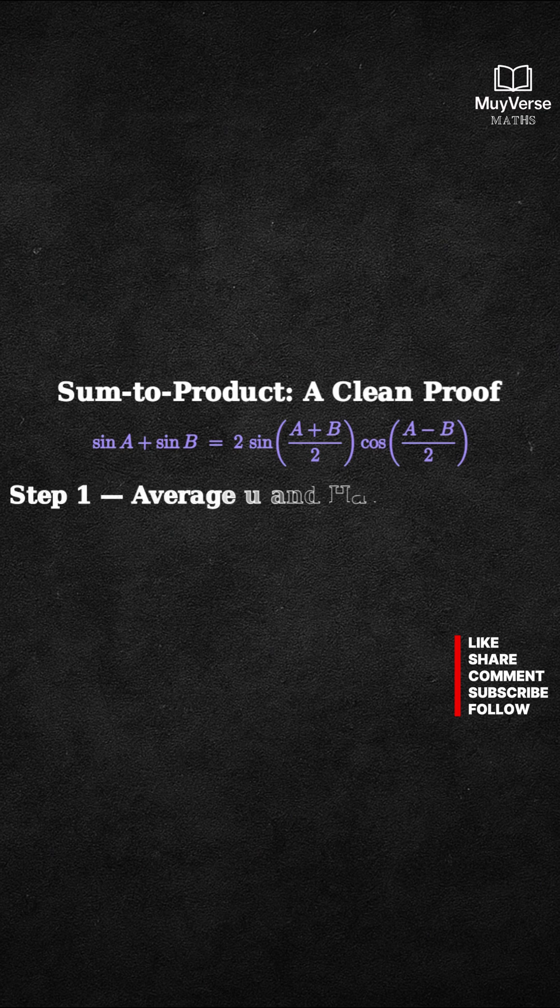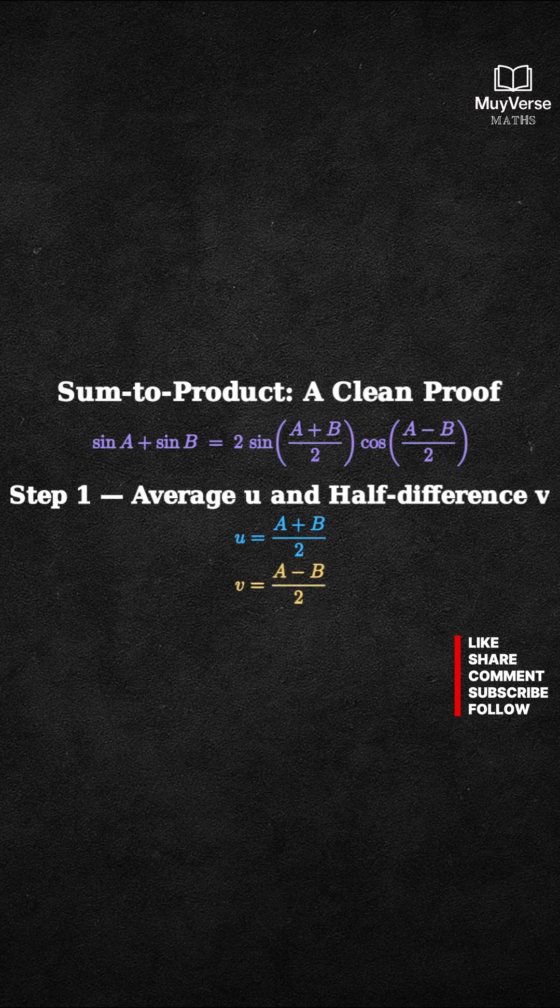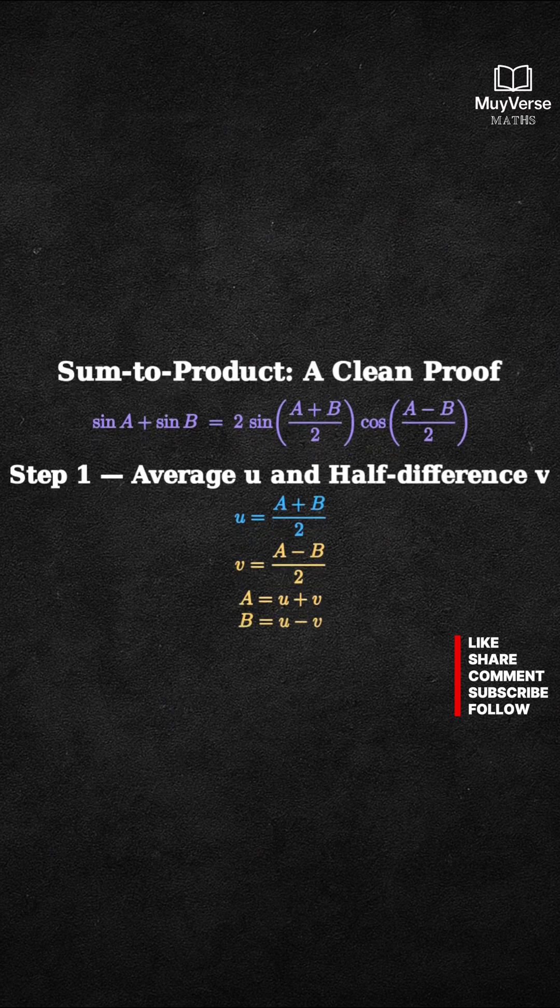Step 1. Introduce the average and the half difference. Let U equal A plus B over 2, and let V equal A minus B over 2. Then A equals U plus V, and B equals U minus V.